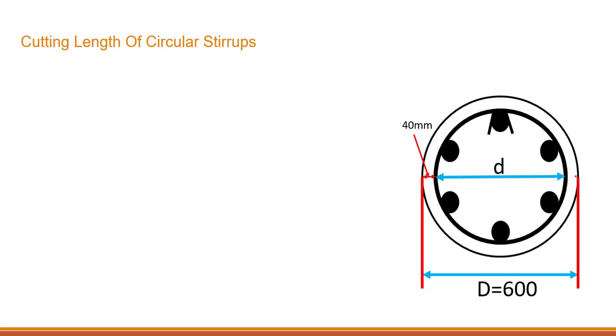Here we have the detail regarding the circular stirrup. Let's suppose we have a circular column over here. The diameter of this column, the external dia I am talking about, is 600 mm. And the concrete cover that we are using over here is 40 mm.